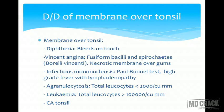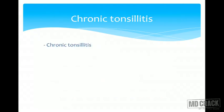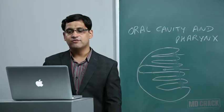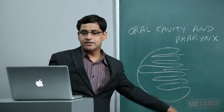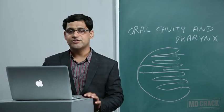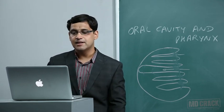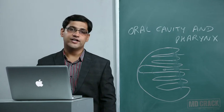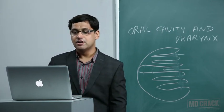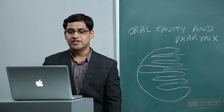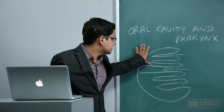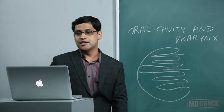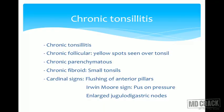Chronic tonsillitis can be chronic follicular, chronic parenchymatous (whole substance involved), or chronic fibroid (tonsil tissue decreases in size after recurrent inflammation). Three cardinal features of chronic tonsillitis: first, flushing of the anterior pillars; second, Irwin-Moore sign — pressing the tonsil causes pus to come out from the crypts; third, enlarged jugulodigastric nodes.